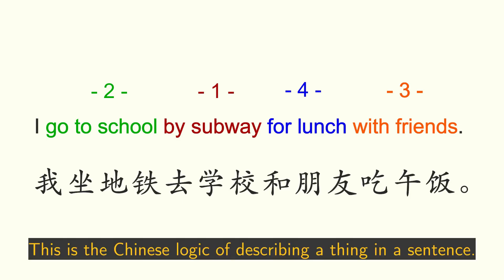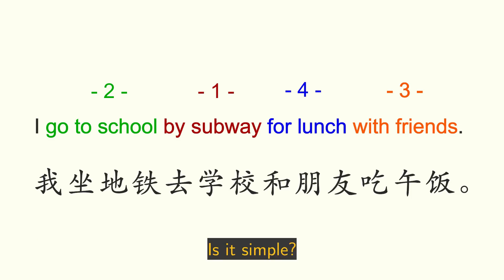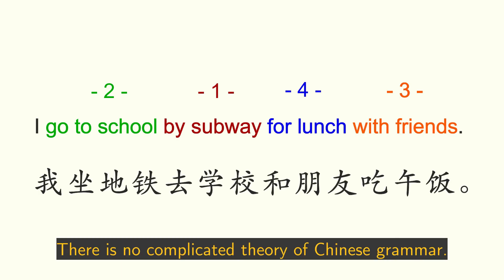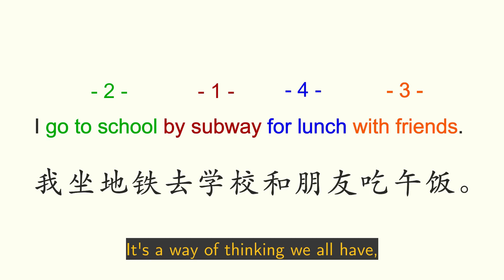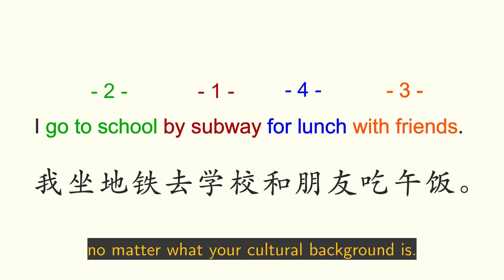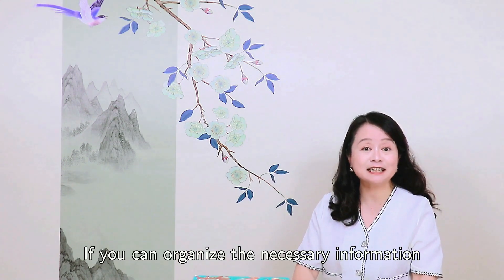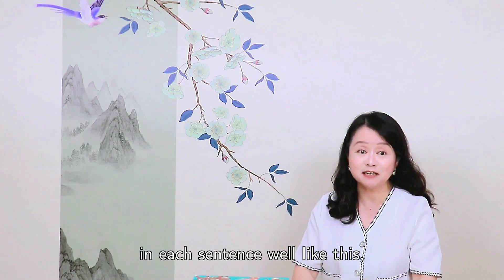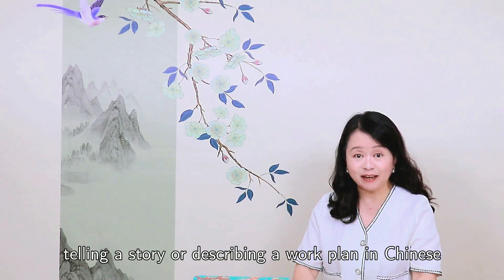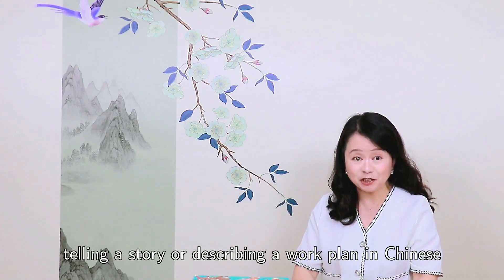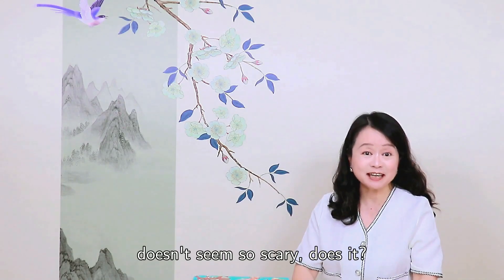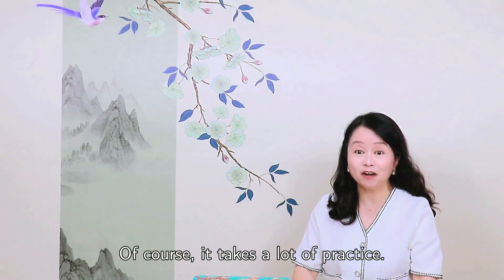This is the Chinese logic of describing a thing in a sentence. Is it simple? There is no complicated theory of Chinese grammar. It's a way of thinking we all have, no matter what your cultural background is. If you can organize the necessary information in each sentence well like this, telling a story or describing a work plan in Chinese doesn't seem so scary, does it? Of course, it takes a lot of practice.